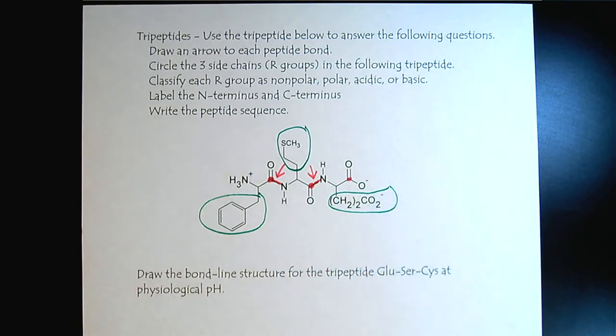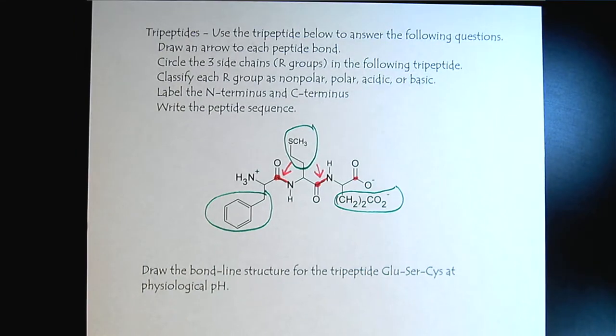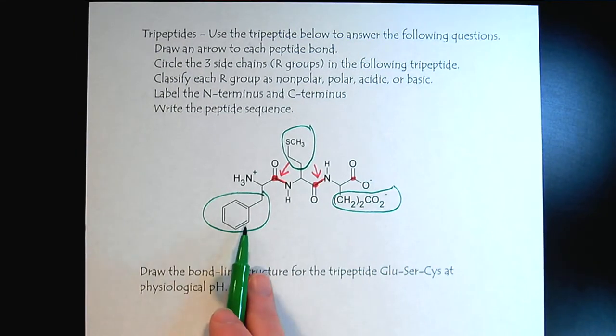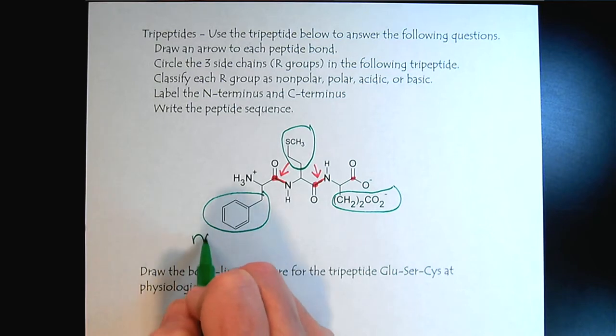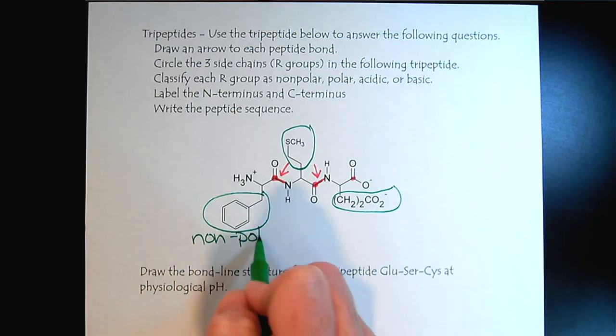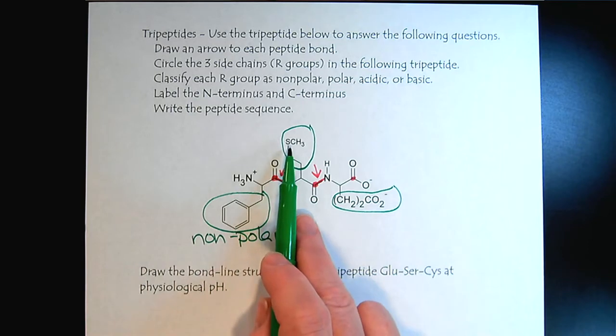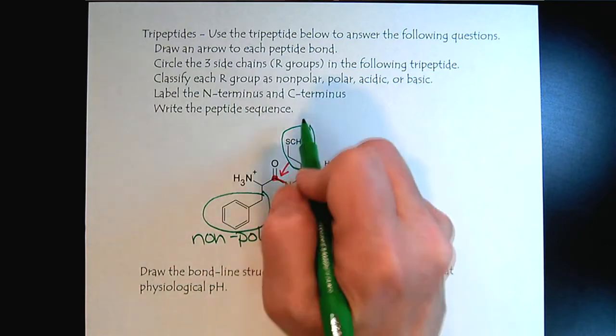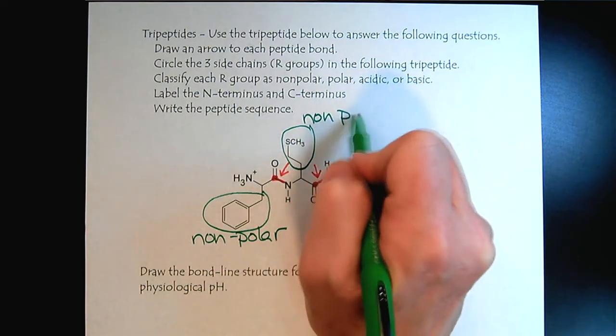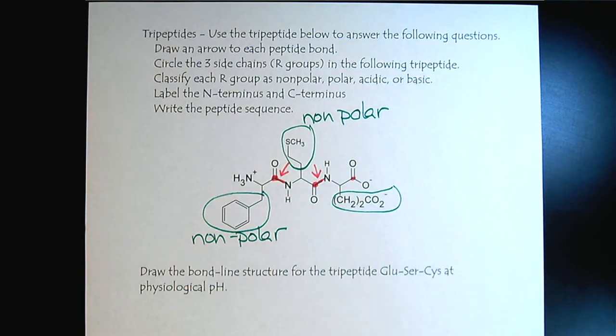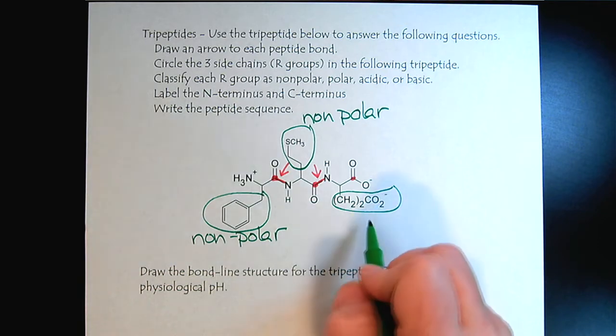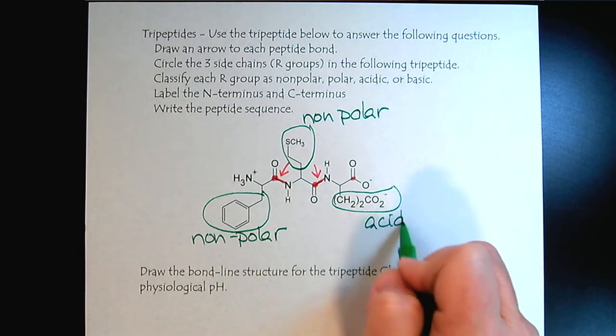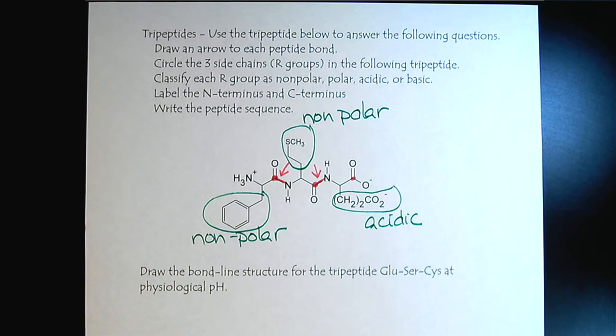Let's practice what we've been learning about amino acids and classify these. This first R group is hydrocarbons, very straightforward - nonpolar. Here we do have a heteroatom sulfur, but it's not bonded to hydrogen, it's sandwiched between two R groups, so it's also nonpolar. With this third R group we see the carboxylate, so we recognize that as an acidic R group.